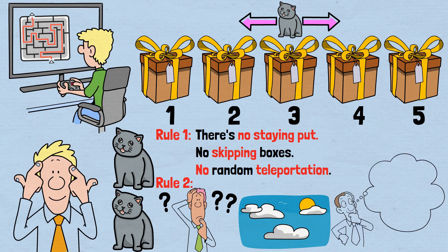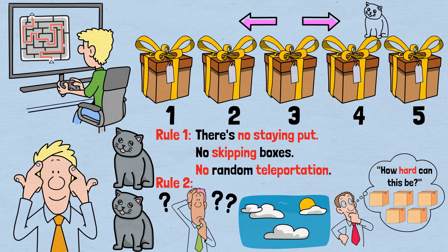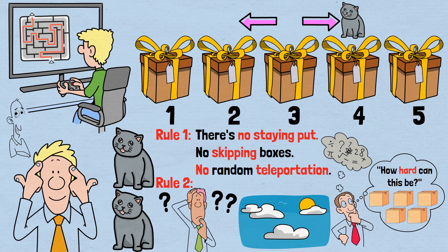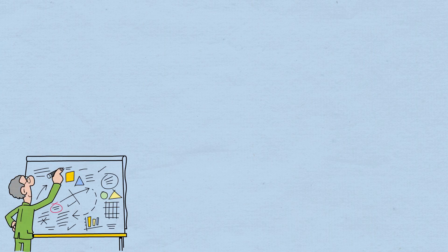At first glance, you might think, how hard can this be? After all, there are only five boxes, and you get unlimited attempts. But as you start thinking through the implications of the cat's movement pattern, you'll discover that this seemingly simple game contains layers of mathematical complexity that will make you appreciate the beauty of logical reasoning. If you're thinking about any of these strategies, they definitely won't work.